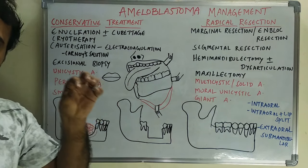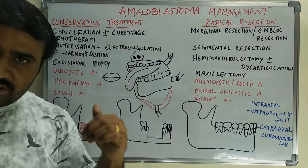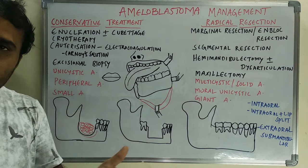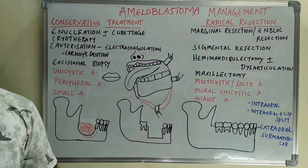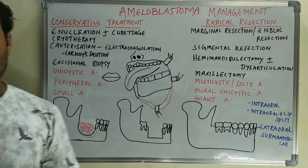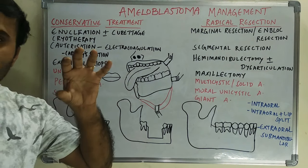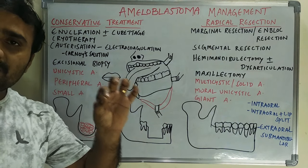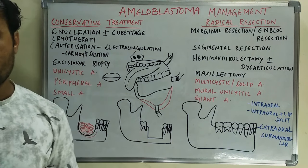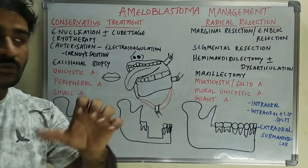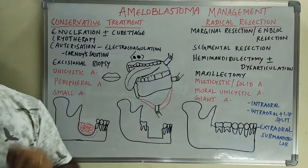Excisional biopsy is especially indicated in cases of peripheral ameloblastoma less than 2 centimeters in size. In those cases, we excise the complete ameloblastic soft tissue growth. The main disadvantage of conservative treatment is the high rate of recurrence — almost about 90% — so it must be done selectively in selected cases.